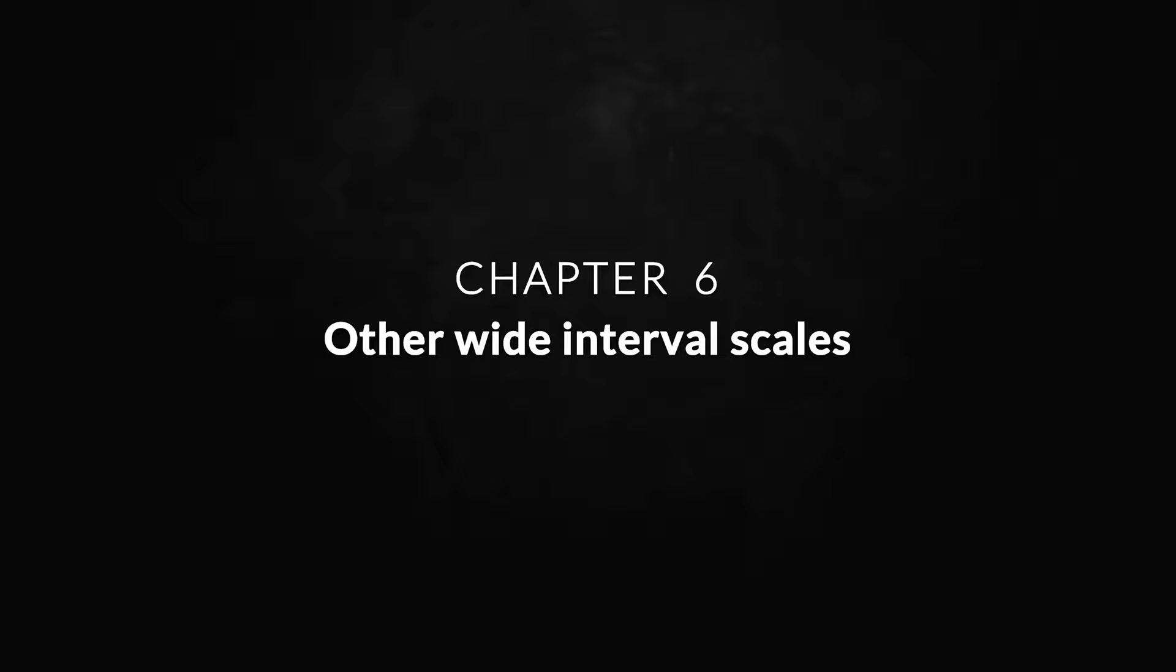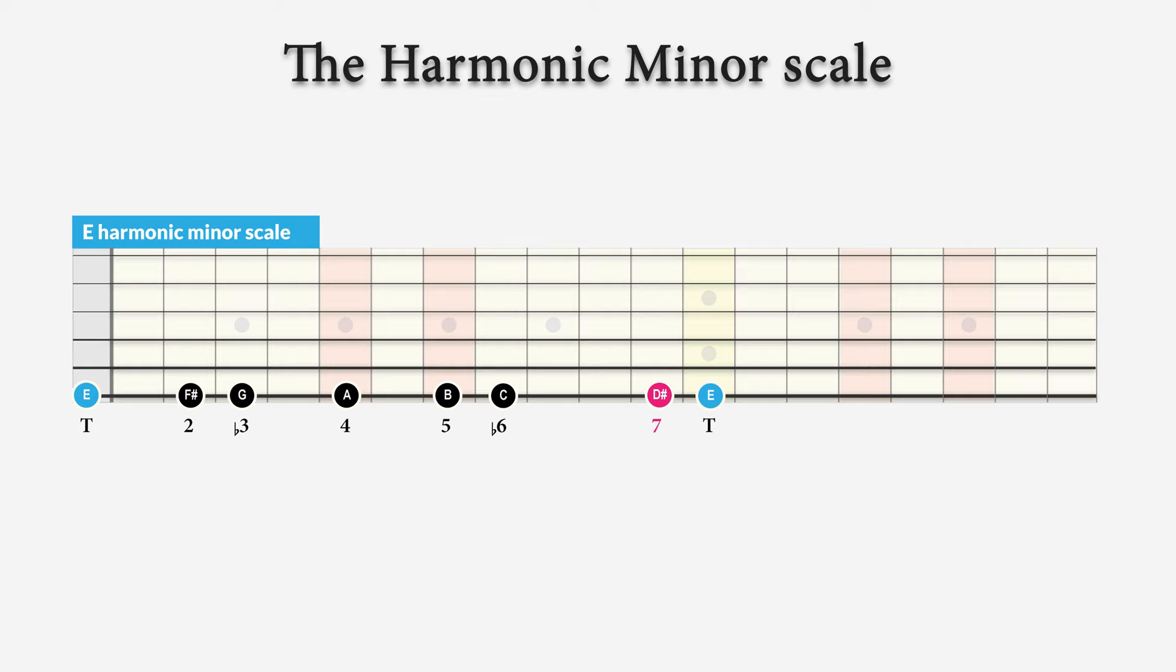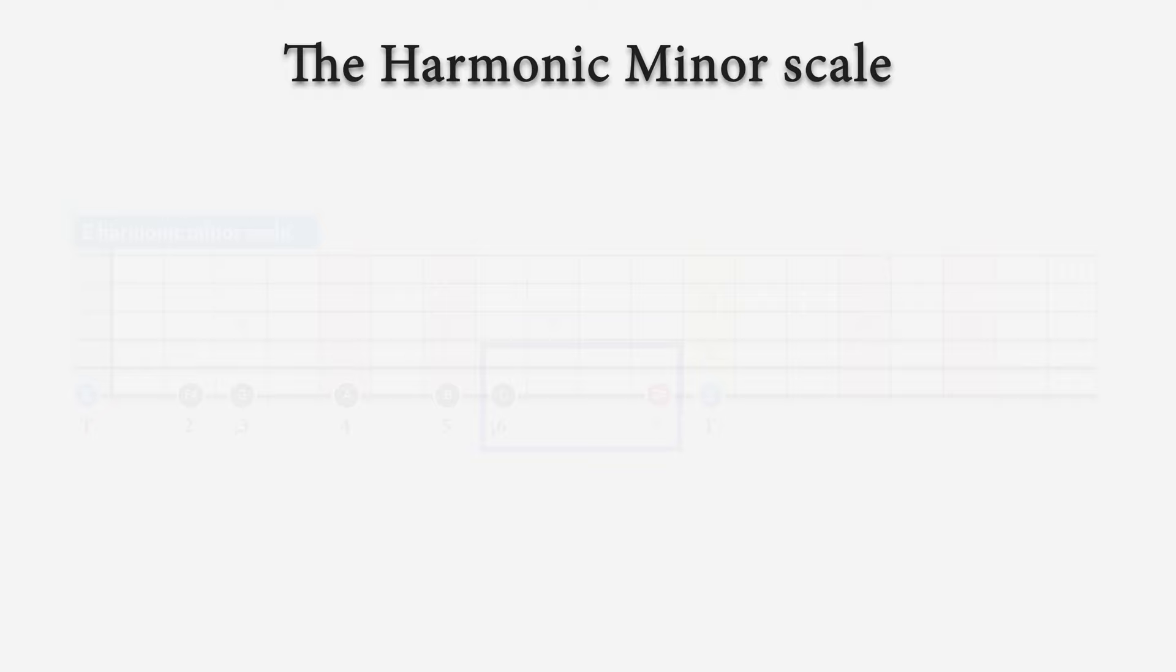Now it's obvious that you can do this with almost any scale. So let's try this for the harmonic minor scale for instance. This is a minor scale with a major 7th degree, and the E harmonic minor scale looks like this. Now you can see that the 7th degree, D sharp, is a major 7th, and the characteristic note in this scale. And the scale is also characterized by the one and a half step between the minor 6th and the major 7th degree in this scale. A wide interval pattern of this scale looks like this.